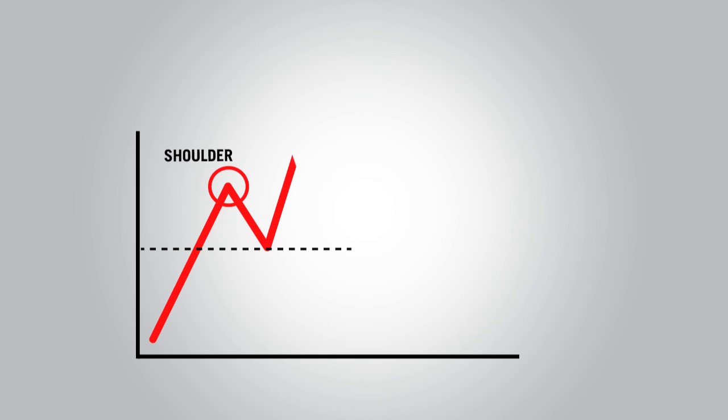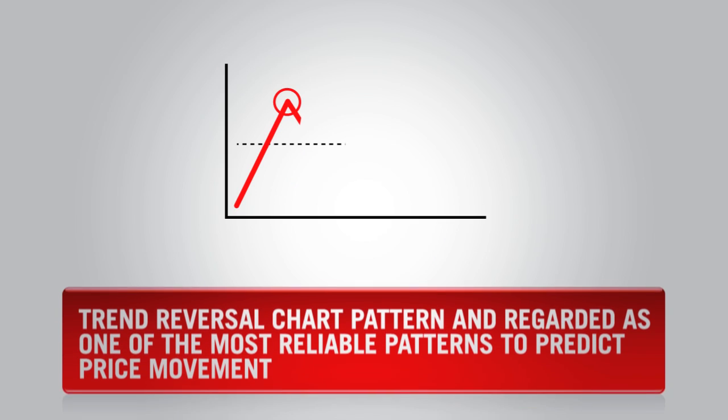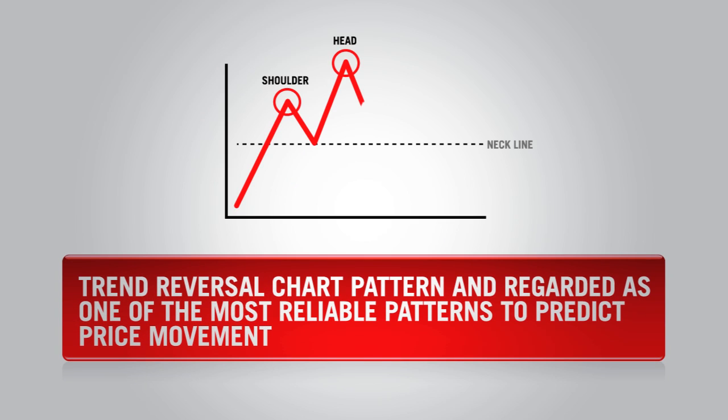Head and shoulders is a technical analysis term that refers to a chart pattern that rises to a peak, then declines, then the price rises above the previous peak and again declines. The last move rises to a peak approximately equal to the first peak before it drops off. Picture a human head and shoulders, and that is what the pattern on the chart will resemble. This is a trend reversal chart pattern, regarded as one of the most reliable patterns to predict price movement.